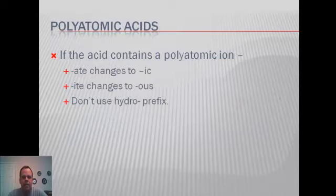The other type of naming of acids that we do is when we have the hydrogen bonded to a polyatomic ion. There's two basic rules that you're going to follow here, depending on the ending of the polyatomic ion. If the polyatomic ion ends in -ate, we'll change it to -ic.